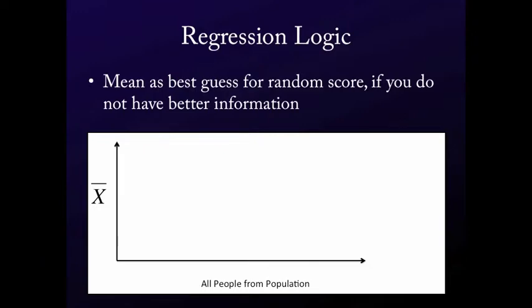Now notice, if you're guessing the mean for everybody, essentially, you're left with a straight line. You're just guessing the same value. No matter what the value is of any other information that you have, you're just going to guess the mean because if you don't know how the information relates, your best guess is still the mean.